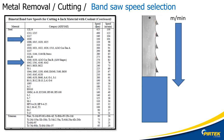Cutting speeds for drilling, turning and milling are also specified in meters per minute. A formula or chart is used to convert meters per minute to RPM in those cases. We will look at this in detail in the turning, milling and drilling unit.